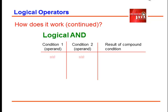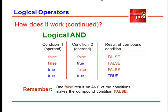How does it work? Logical AND needs all conditions to be set to true to make the compound statement true. So here on our screen, you could see if there is a false existing on both conditions, the entire compound condition is set to false. Of course, you need to make all conditions true to make the compound condition true. Just remember that one false result on any of the conditions makes the compound condition false.